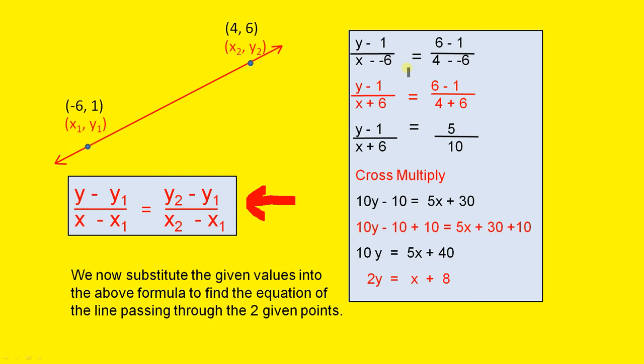Now, let us go through all the way down and simplify all this to work out the equation. The y minus 1 is repeated here. X minus minus 6 is x plus 6. Because when you have minus minus, that's actually a plus. The 6 minus 1 is repeated here. And 4 minus minus 6 is 4 plus 6.